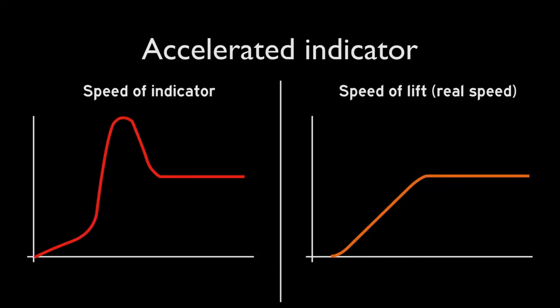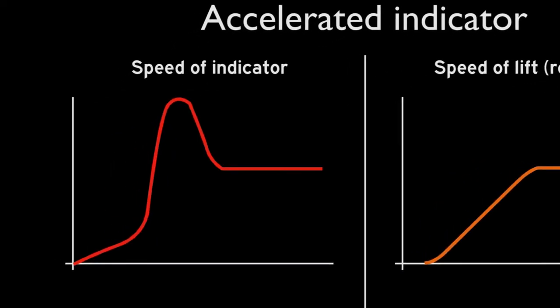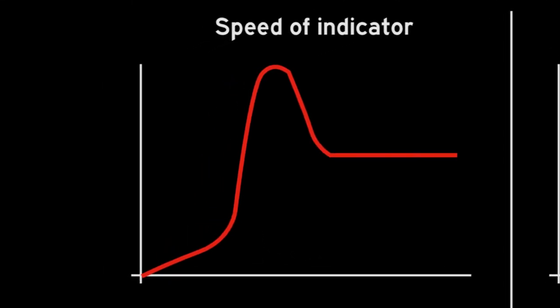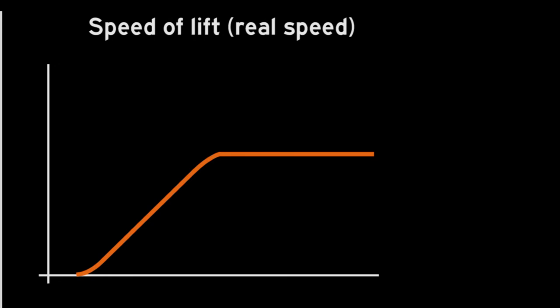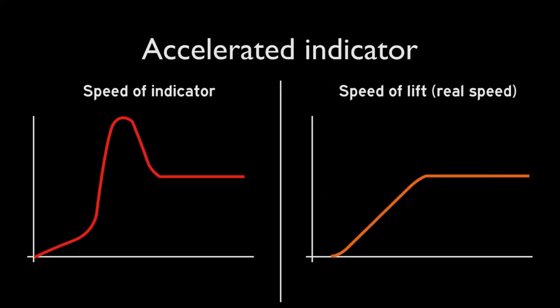So, what you saw right there is called an accelerated indicator. The speed of the indicator has a bump, which I hate. I don't like bumps. But looking at the real speed of the lift, there's no bumps. It's a smooth acceleration, which is much, much better.